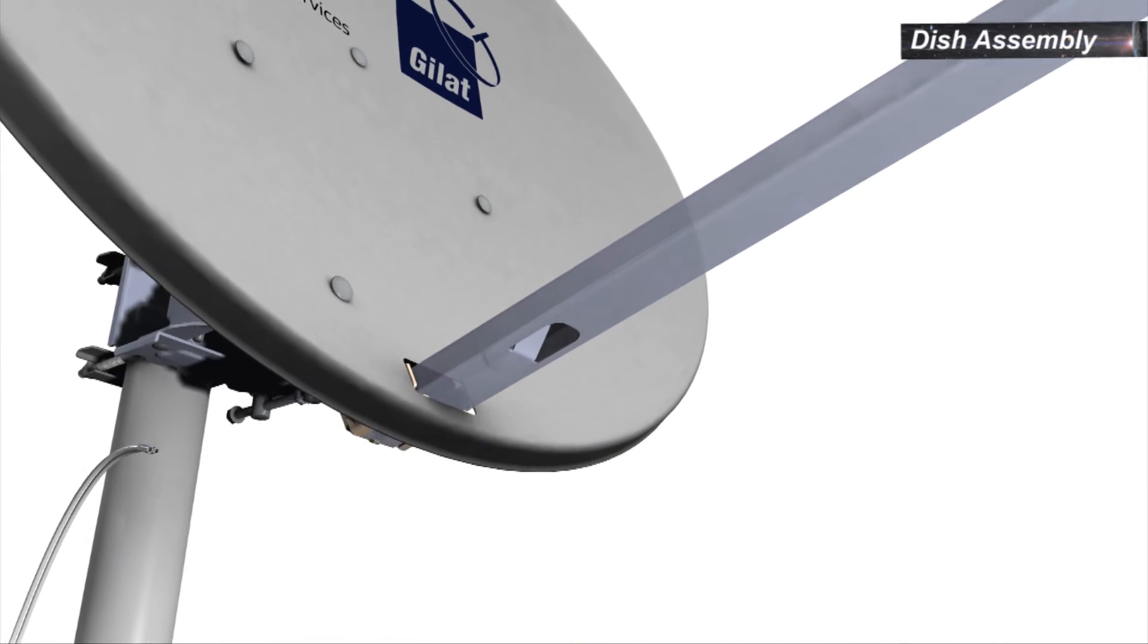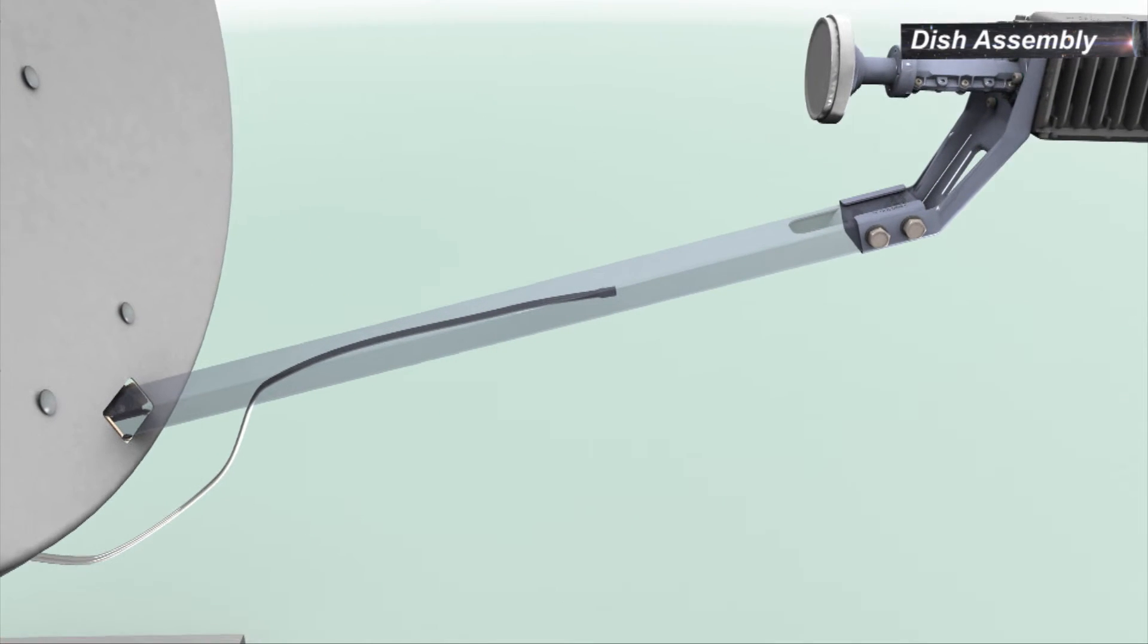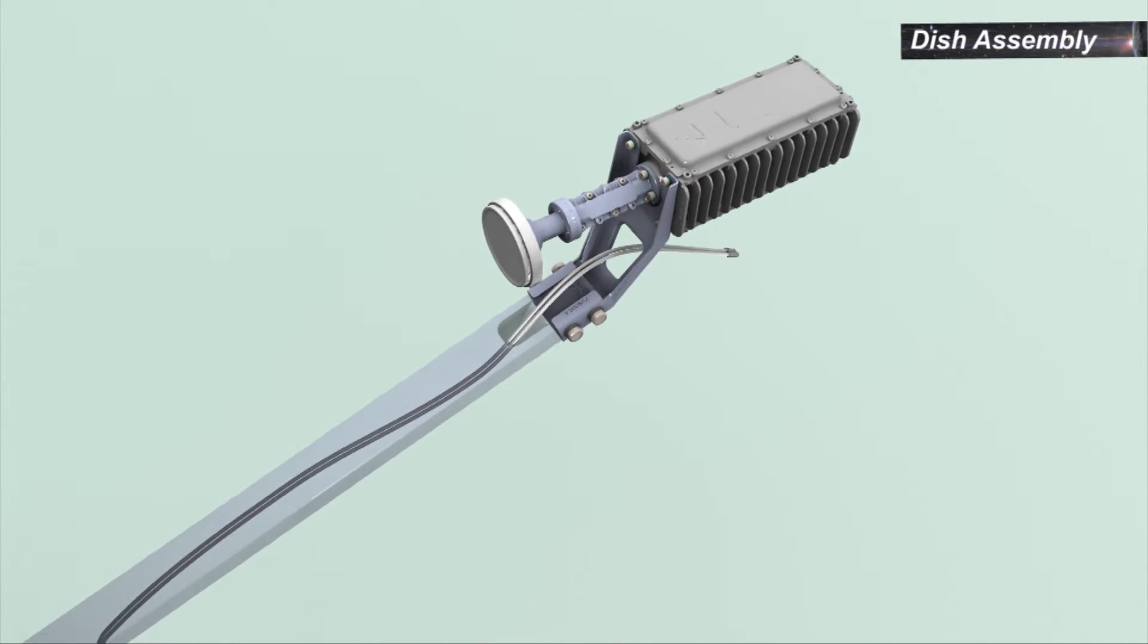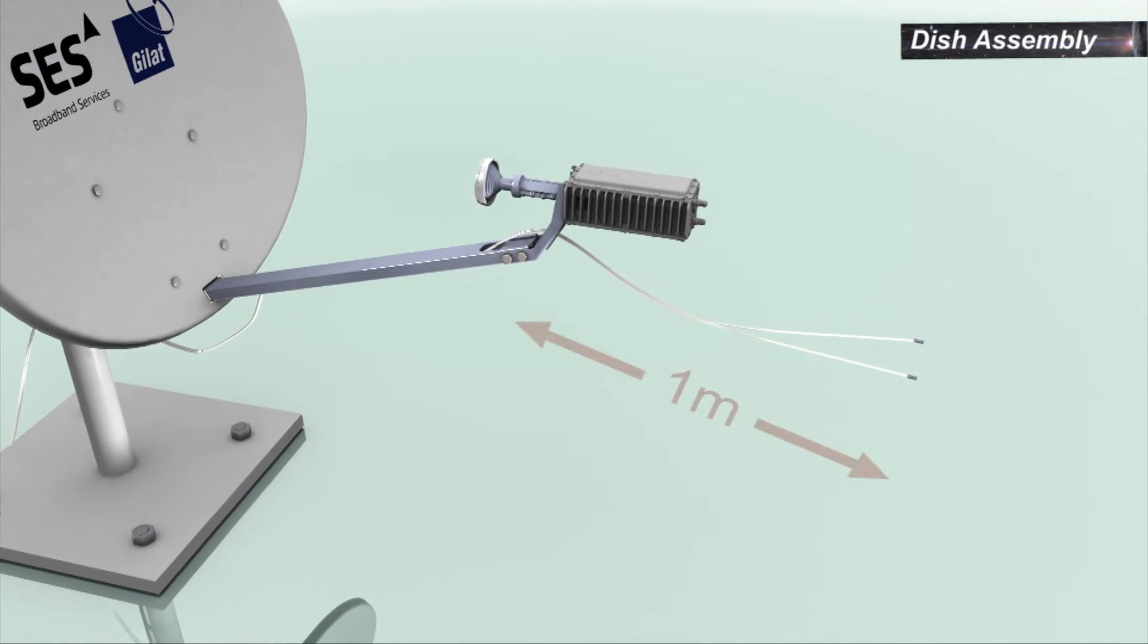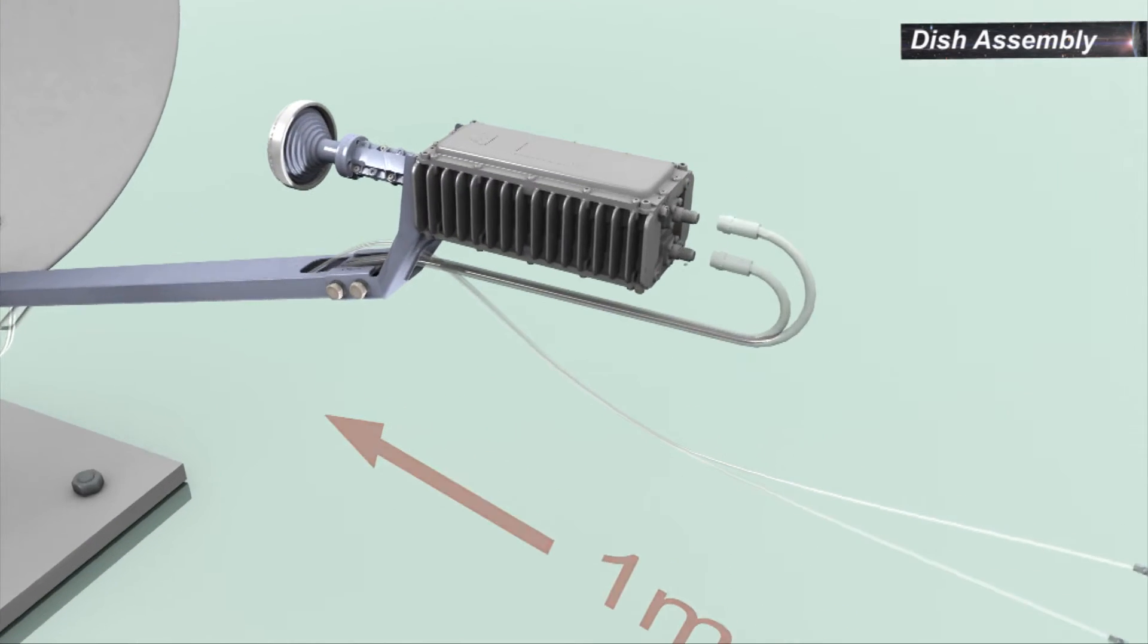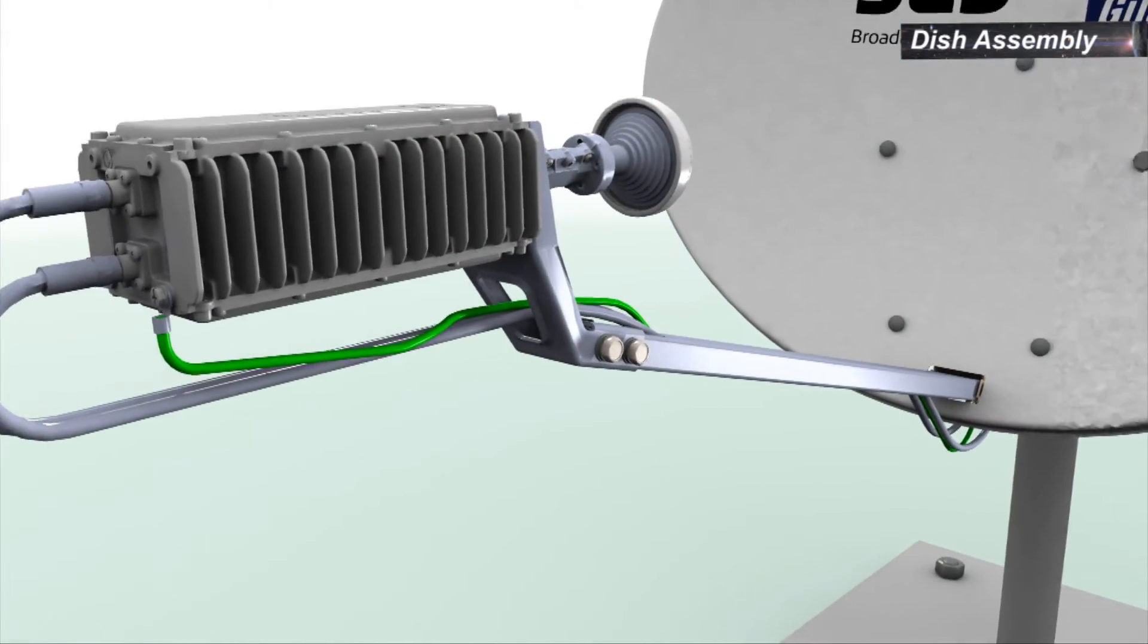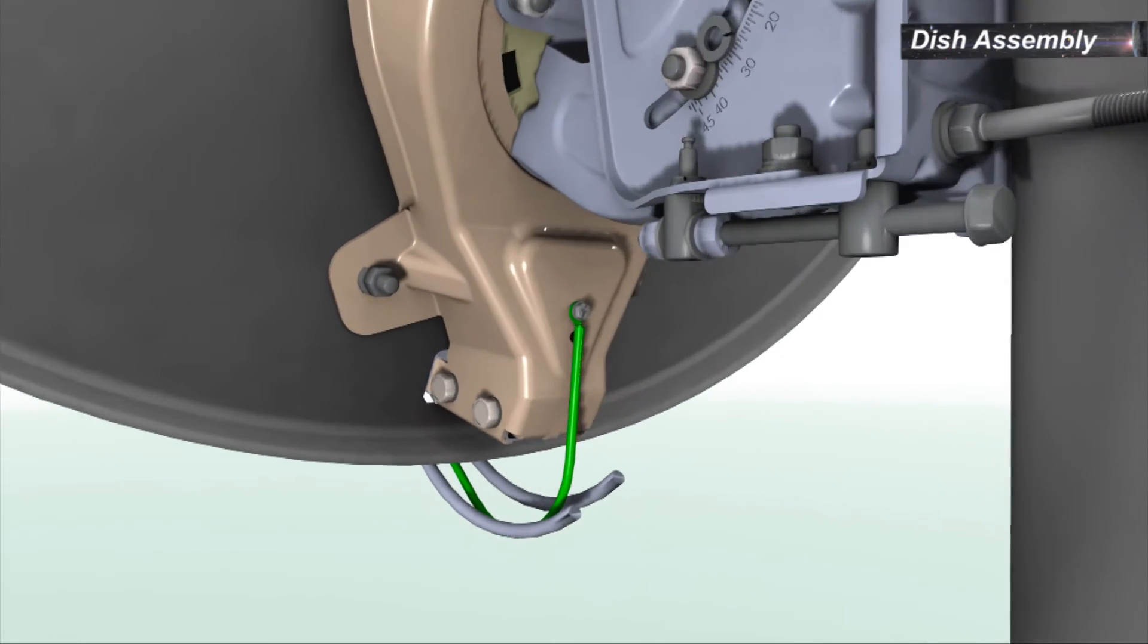To thread the RF cables through the boom, feed the outdoor ends of the cables through the boom in the direction of the transceiver. Leave about one meter of extra cable length between the boom arm and the transceiver. Connect the grounding wire to the transceiver and back bracket.